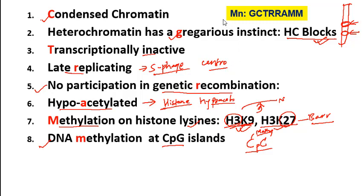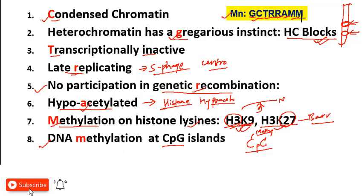You can remember all these properties of heterochromatin through this mnemonic: GC TRAM. G for gregarious in nature, C for condensed chromatin, T for transcriptionally inactive, R for last to replicate, next R for does not take part in recombination, A for histones are hypoacetylated, and M for histones and DNA in the heterochromatic region are methylated.